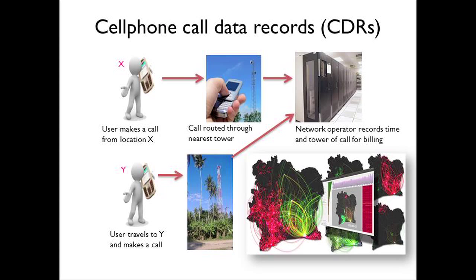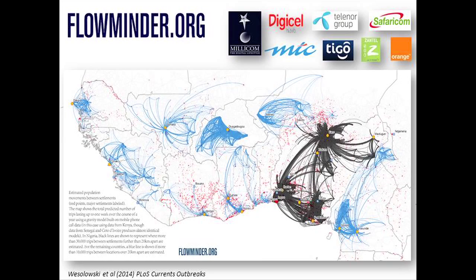What I mean by mobile phone CDR data: if you make a call at a location, it's routed through the nearest tower and the network operator records the time and tower location for billing purposes. If you then move somewhere else and make another call, that information is also recorded, so you get information about movement from one location to another. Given how rapidly mobile phones have spread globally, we can get movement patterns of millions of people at detailed spatial and temporal scales never before possible.